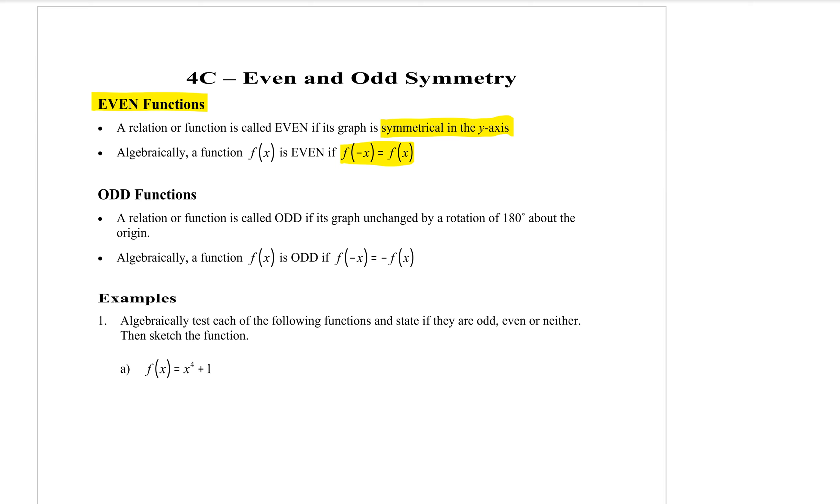For an odd function, a function or a relation is odd if it stays unchanged by rotating the graph 180 degrees about the origin. Algebraically to prove this, if you sub in minus x into your function and it is the negative of your original function then it will be odd.